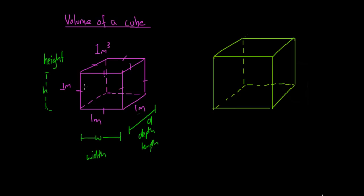There is a way that we can work out the volume of this cube. If we think of a 1 meter cube where all of the sides are 1 meter in length, there is another way we can do it. We could say that if the height is 1 meter, the width is 1 meter, and the depth is 1 meter, we can multiply all of these together in order to work out the volume. So simply: height multiplied by width multiplied by depth gives us our volume.